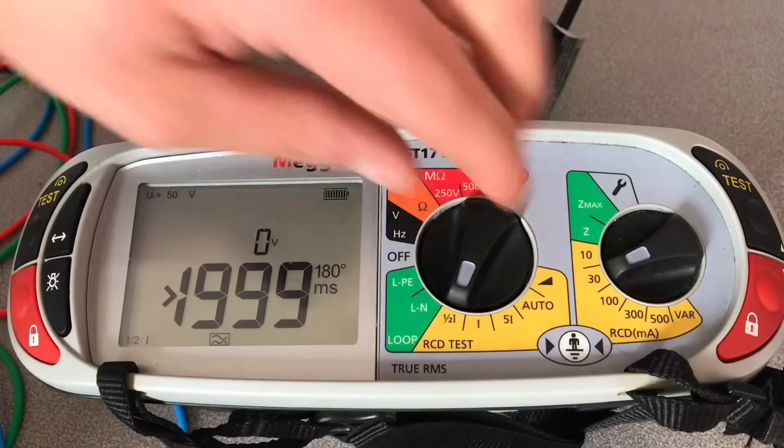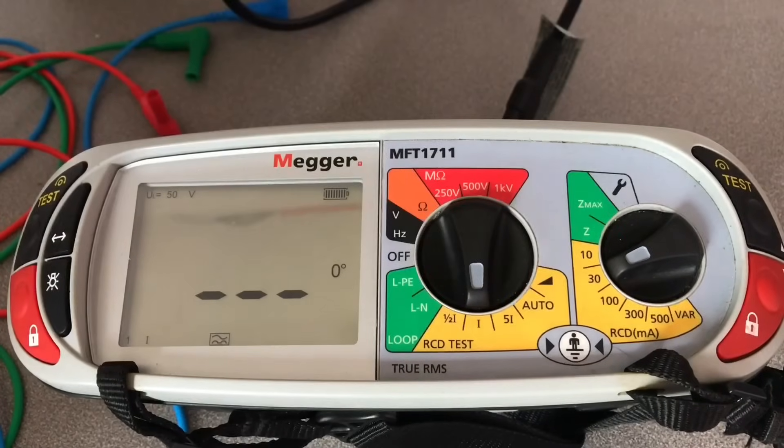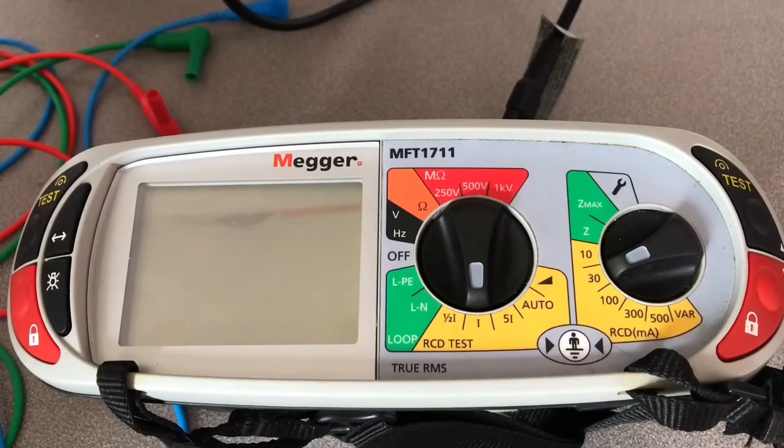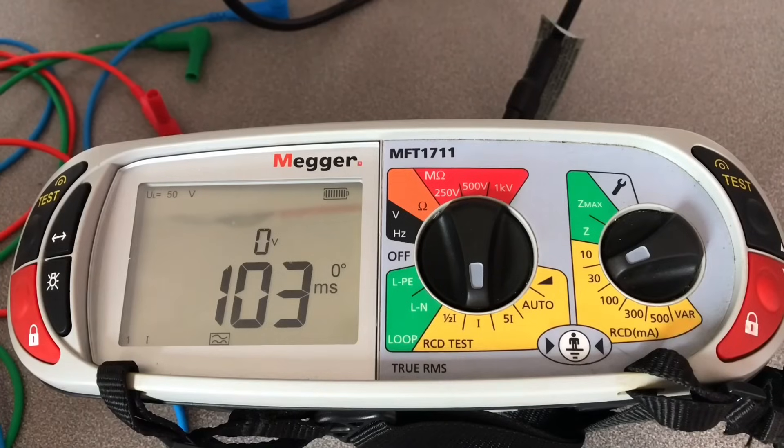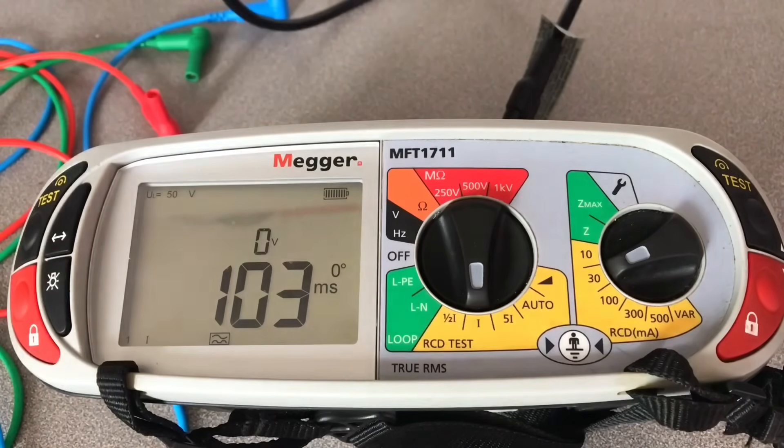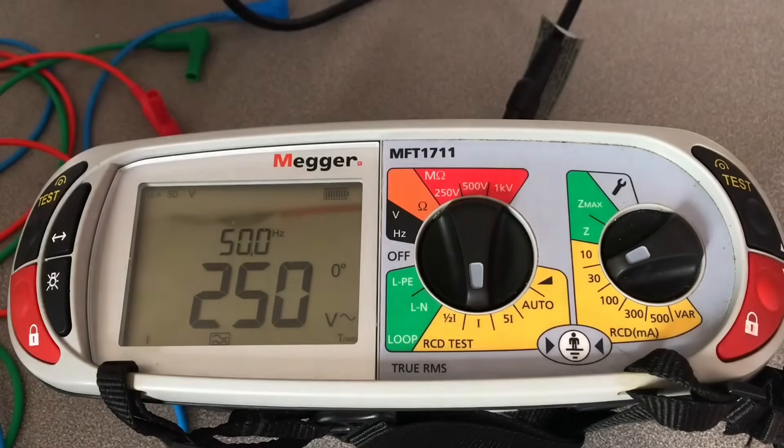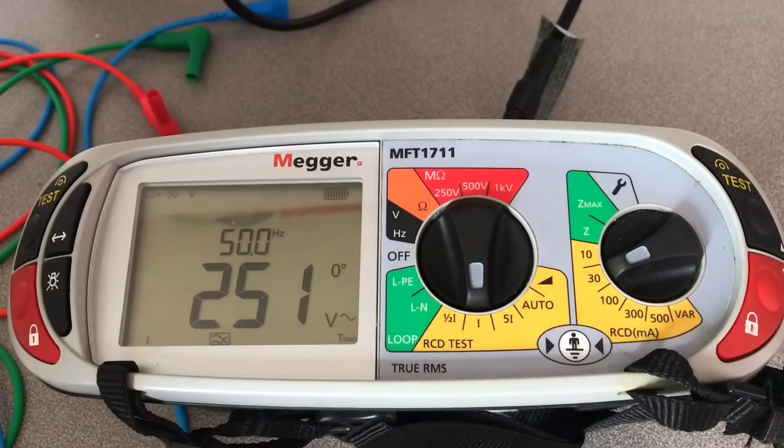Now we're going to test it at one times I-delta-N. We've gone back to zero degrees. We're still on A type. 103 milliseconds. Wow. I've never seen numbers that big before. Still acceptable. However, still on the high side. But it's well within the 300. I think that's probably just going to be a psychological change in thinking that we're not going to see very small numbers. We're now going to see maybe higher numbers than these A type RCDs.